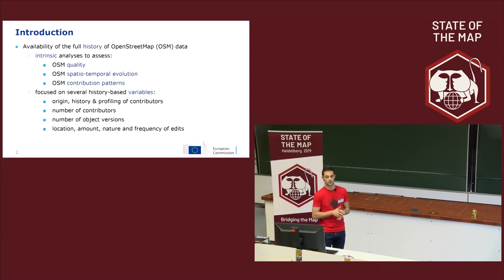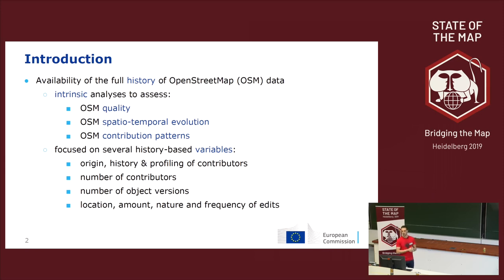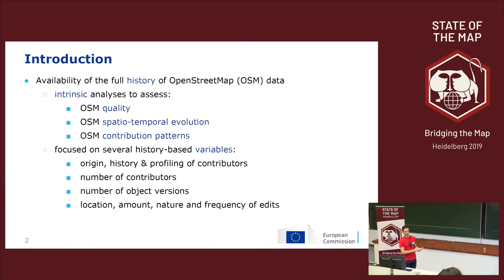Usually in literature, these studies have been focused on some variables: information on contributors — where do they come from, what they edit, how much, how frequently, how many contributors there are, or how many contributors edit specific objects — how many versions or revisions, and also information on the edits themselves: what is changed, where, how much, how frequently.